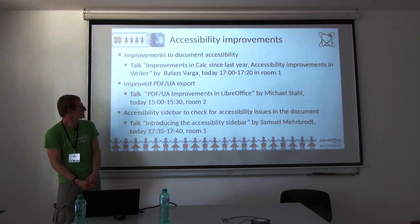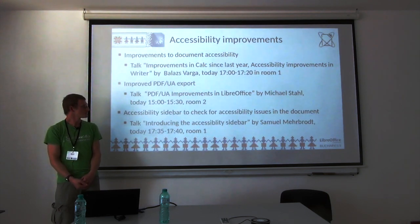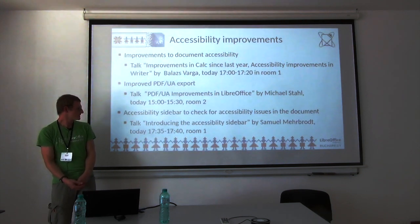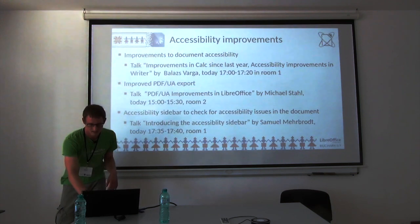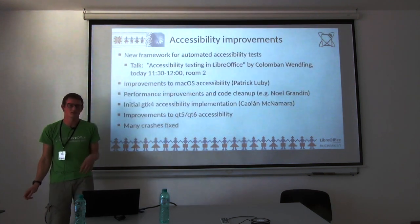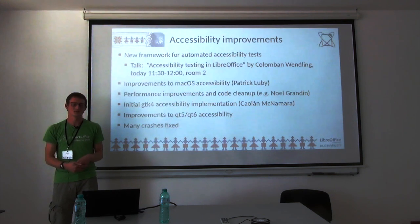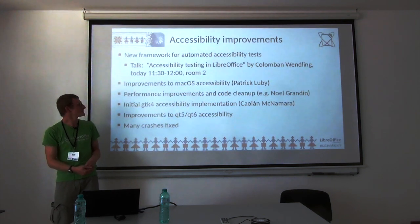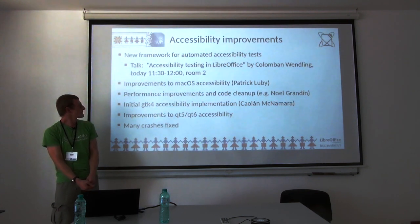Michael Stahl will talk about better PDF/UA export — how accessible attributes are written to PDF. Samuel Merbrot will cover the accessibility sidebar. Right after this talk we'll hear more about a new accessibility testing framework by Colom Bonet, which is really nice for preventing regressions — keeping things that used to work from breaking.